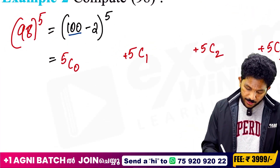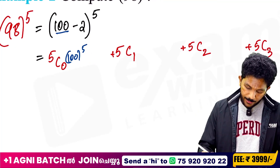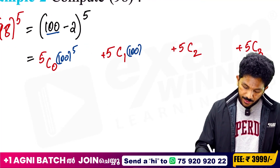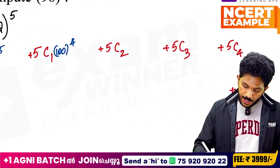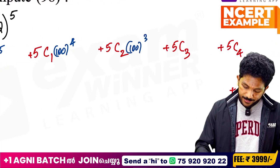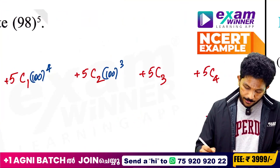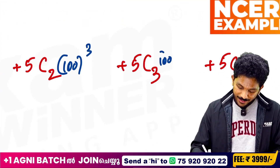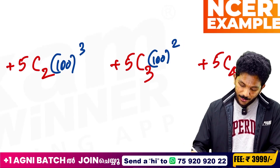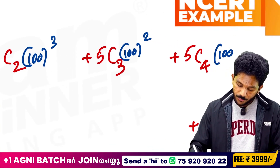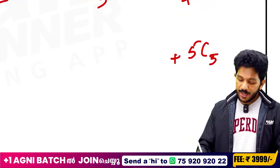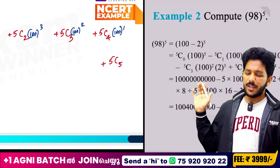Now let's get 100 terms. 100 raised to 5. 100 raised to 5 minus 1 is 4. 100 raised to 3. 100 raised to 2. 100 raised to 5 minus 4 is 1. 100 raised to 5C5.